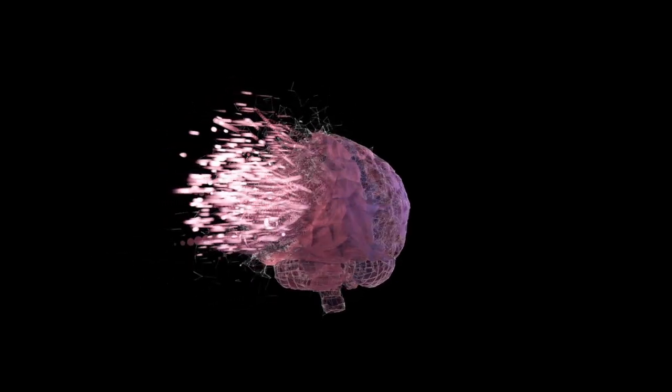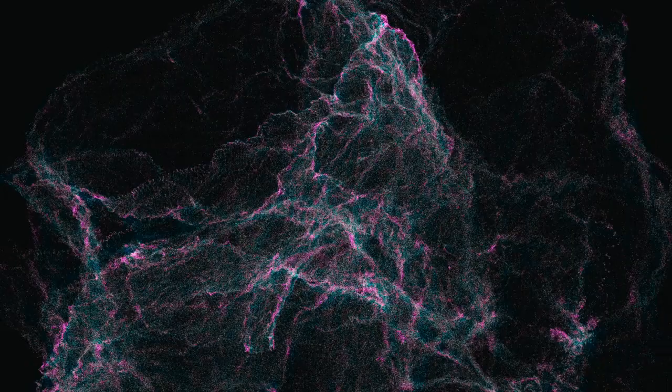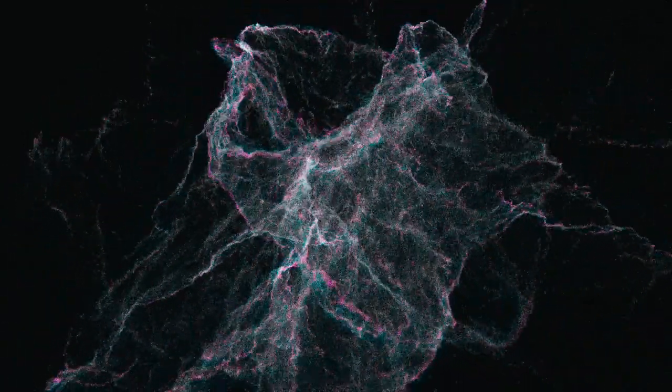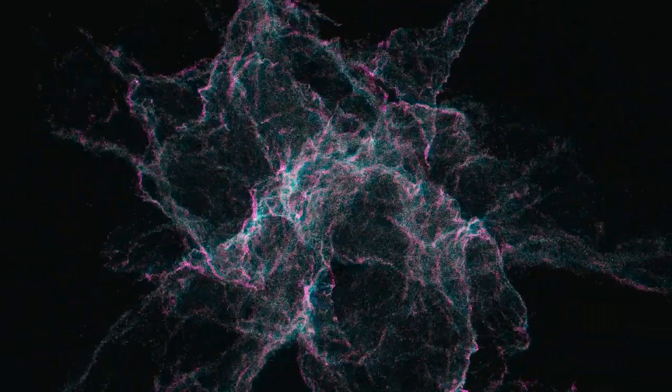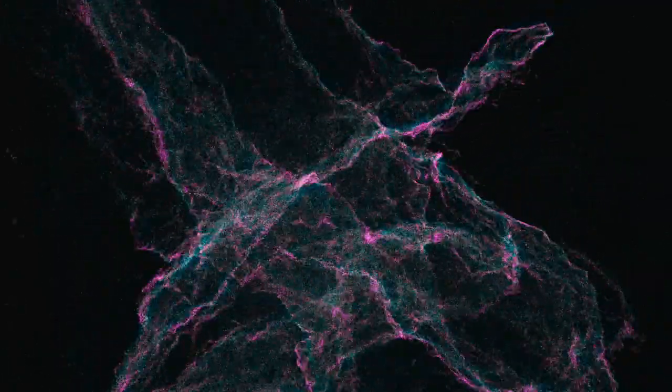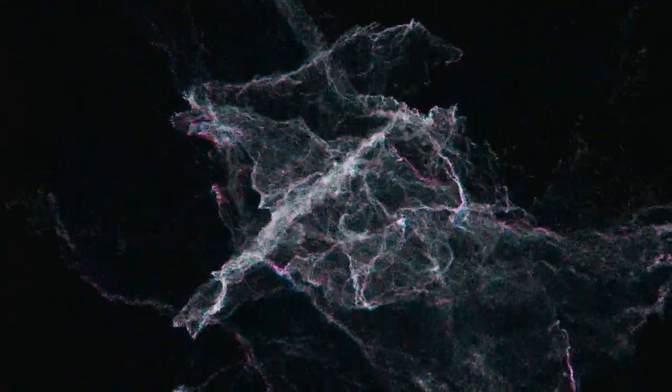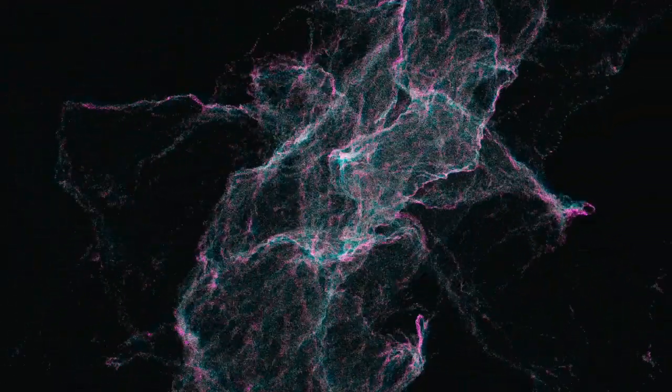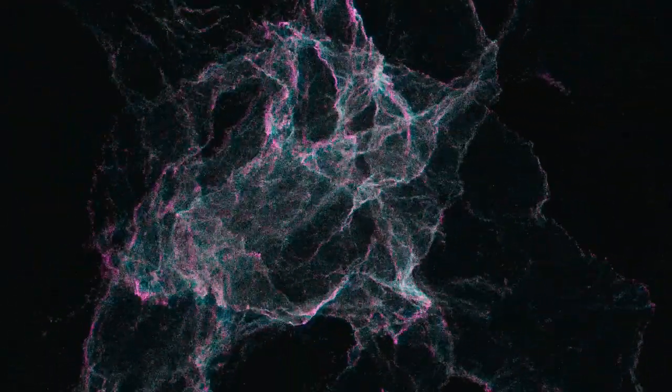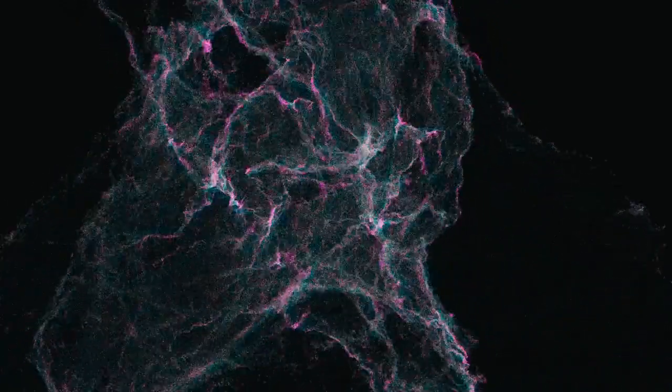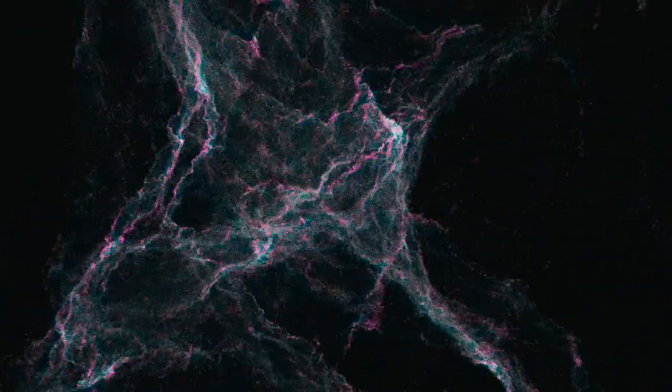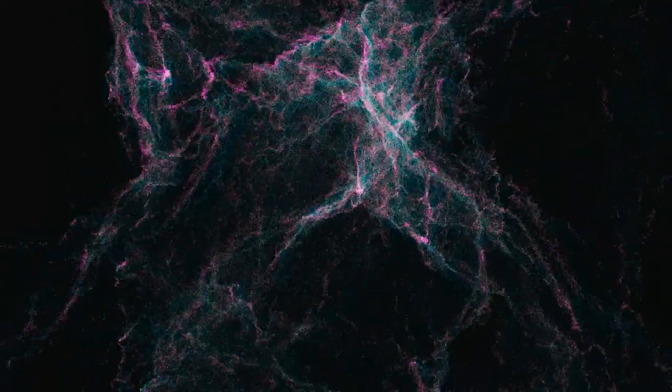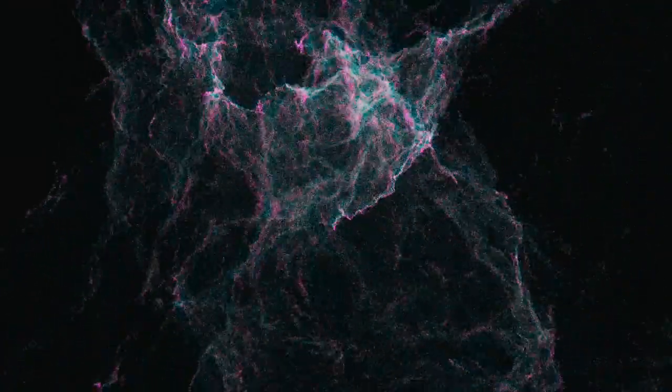Picture this. Inside every neuron in your brain are tiny structures called microtubules. Think of them as quantum computers—not classical computers you're familiar with, but quantum processors that can exist and work in multiple states simultaneously. According to Orch-OR,